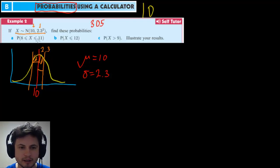So question is probability that a value of X is between 8 and 11 inclusive. So including 8 and 11. Probability of this is part B. Probability of X is less than or equal to 12 or probability of X is more than 9. And illustrate your results.